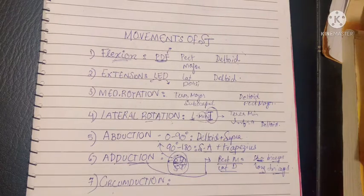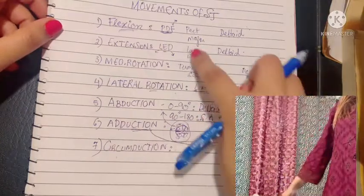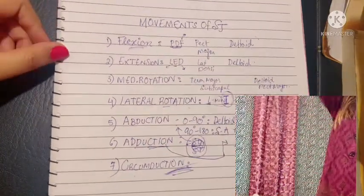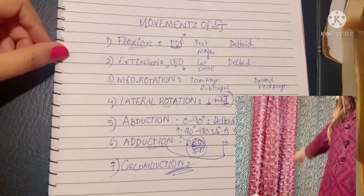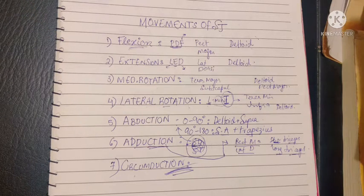Finally, the final movement of the shoulder joint is circumduction. This is a combination of all these movements. That was all about the movements of the shoulder joint and the muscles involved. Thank you for watching.